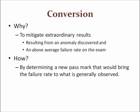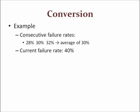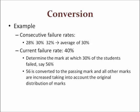The procedure involves establishing a new pass mark for the exam and converting student marks accordingly. For example, if the failure rates observed over the last three years have been 28%, 30%, and 32%, and then suddenly the failure rate is 40%, this looks anomalous. The average of the past observed failure rates is calculated to 30%, and we see that there is a significant difference. Conversion does not affect all marks equally.